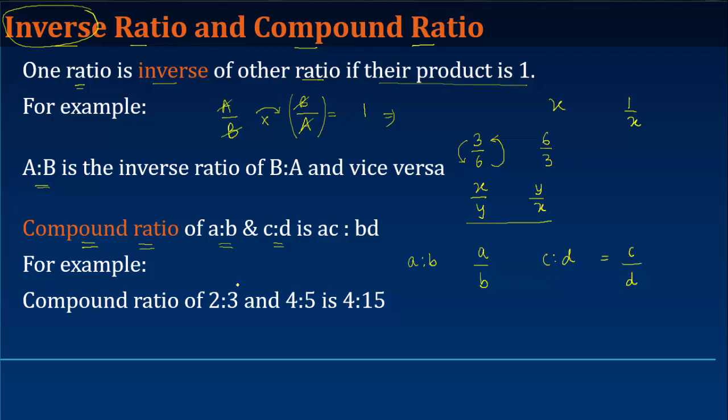In that case, the compound ratio of these two, which is written as A is to B and C is to D, can be obtained by multiplying their numerator with the numerator and denominator with the denominator. So you get A times C in the numerator and B times D in the denominator.